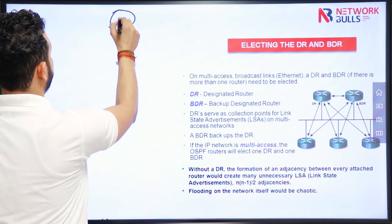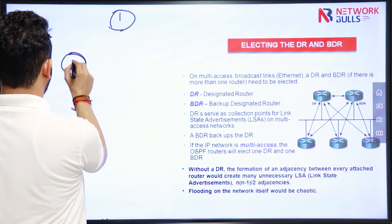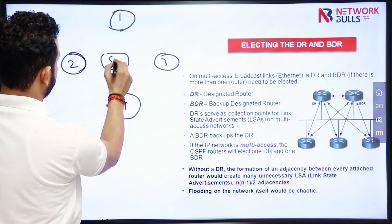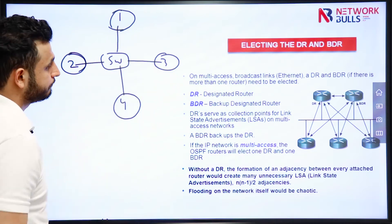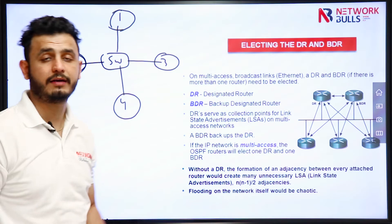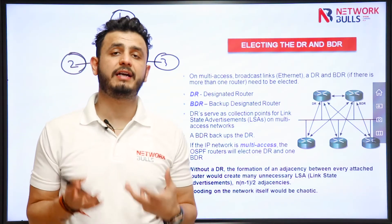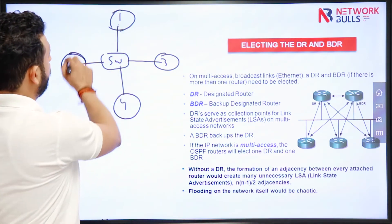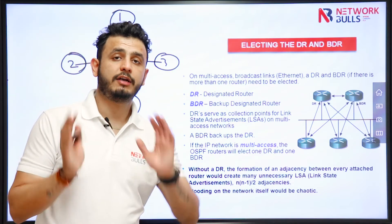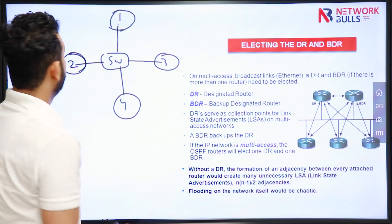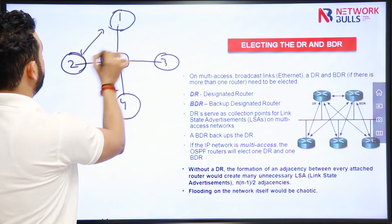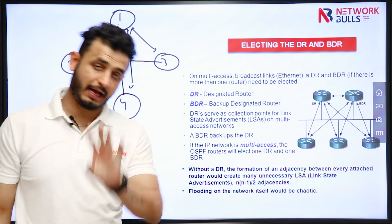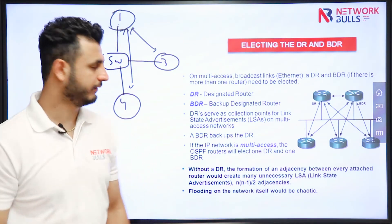Let's say I have some routers — R1, R2, R3, R4 — connected through a switch. This is a multi-access segment. If we assume there is no DR/BDR concept, all routers will form adjacency with all other routers. From the perspective of R1, it will form adjacency with R2, R3, and R4 — that is three adjacencies. Every router will form three adjacencies.